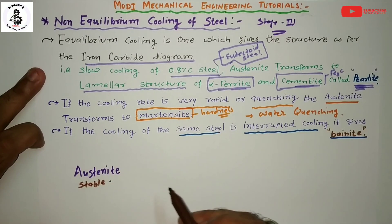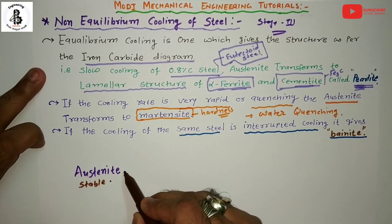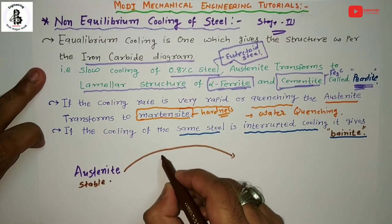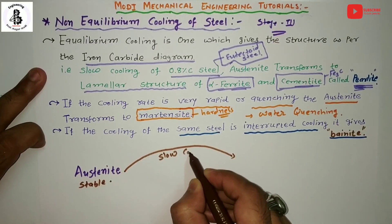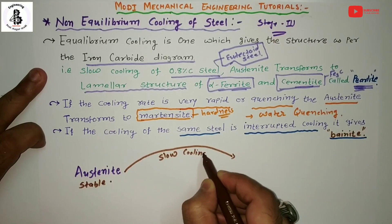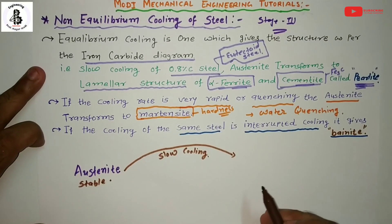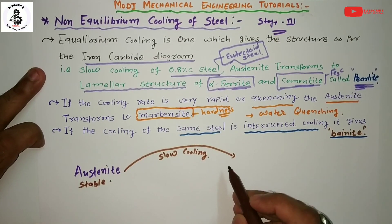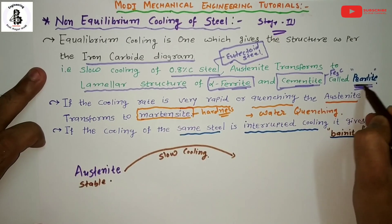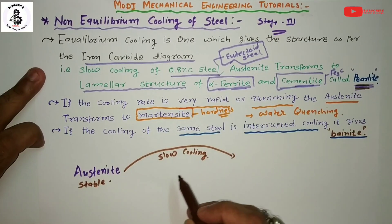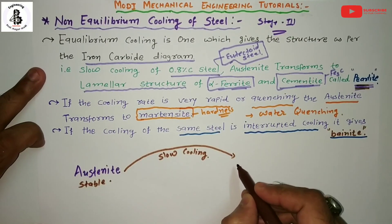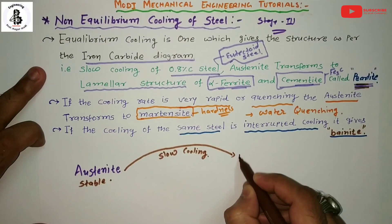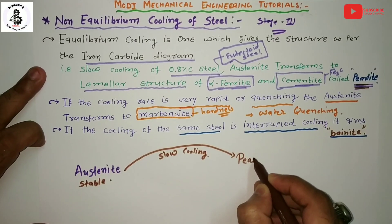Starting with the slow cooling rate: as already discussed with the iron-carbon diagram for steel structures, slow cooling produces pearlite because it is equilibrium cooling. So austenite with slow cooling converts into pearlite.